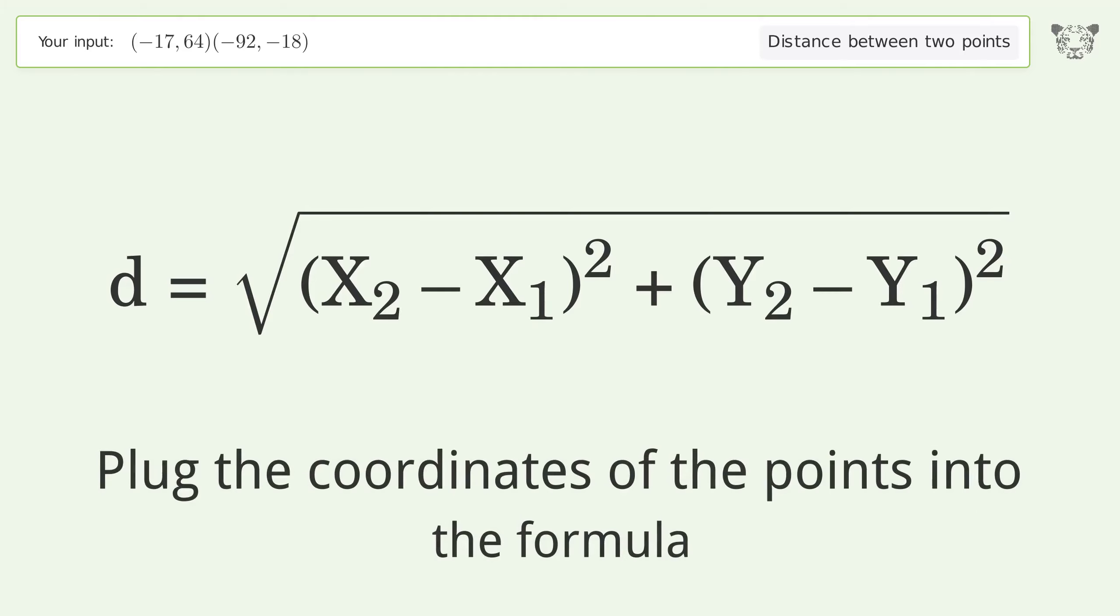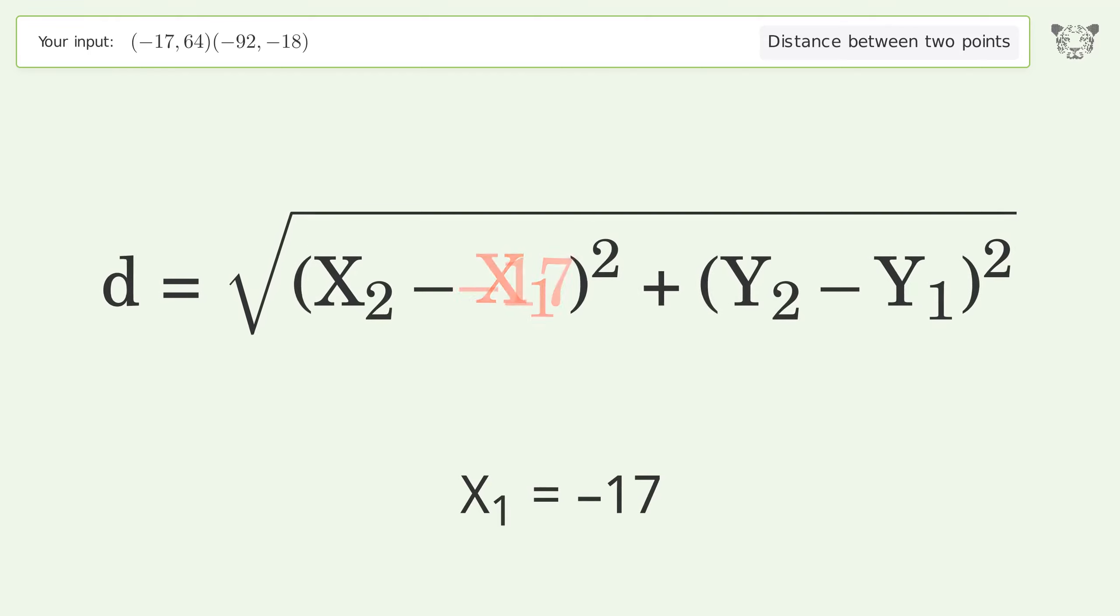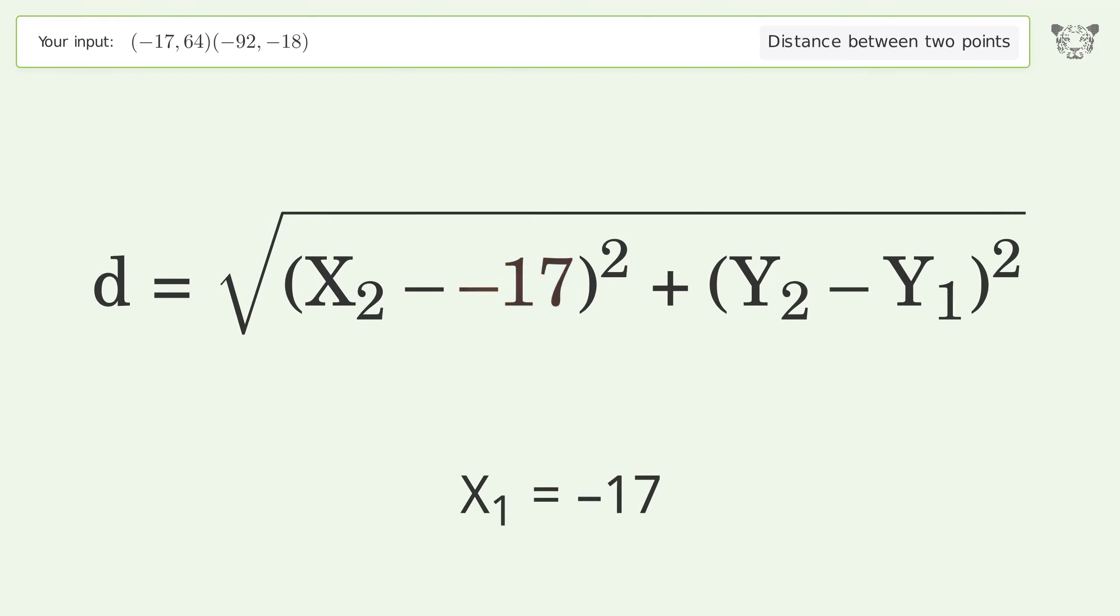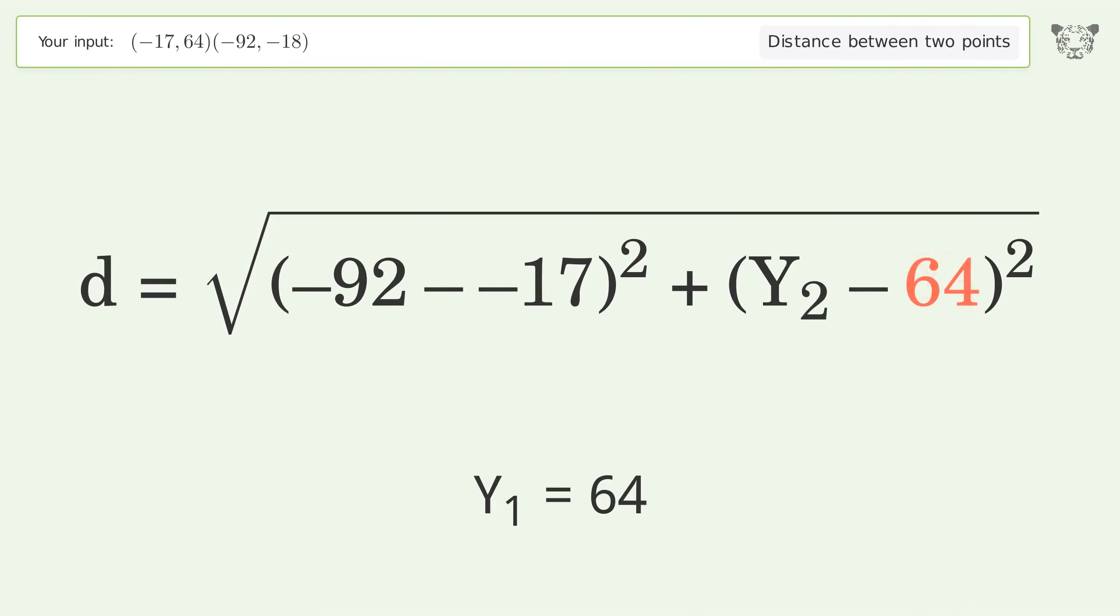Plug the coordinates of the points into the formula: x1 equals negative 17, x2 equals negative 92, y1 equals 64, y2 equals negative 18.